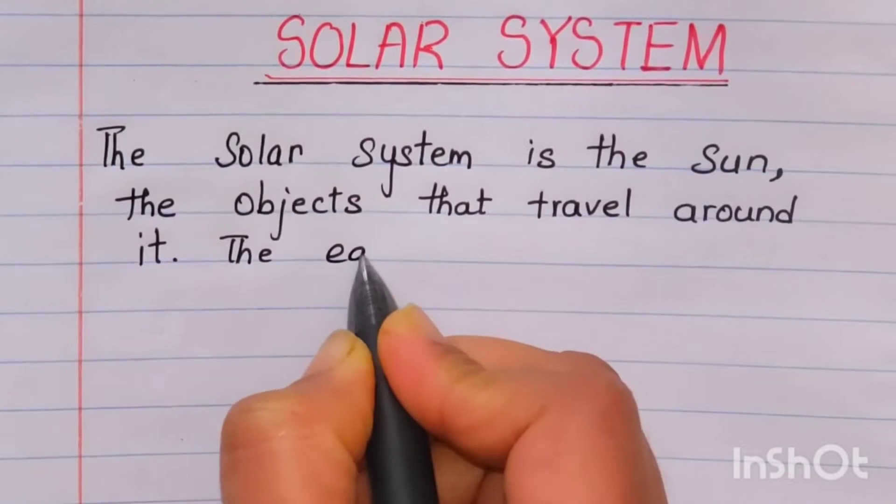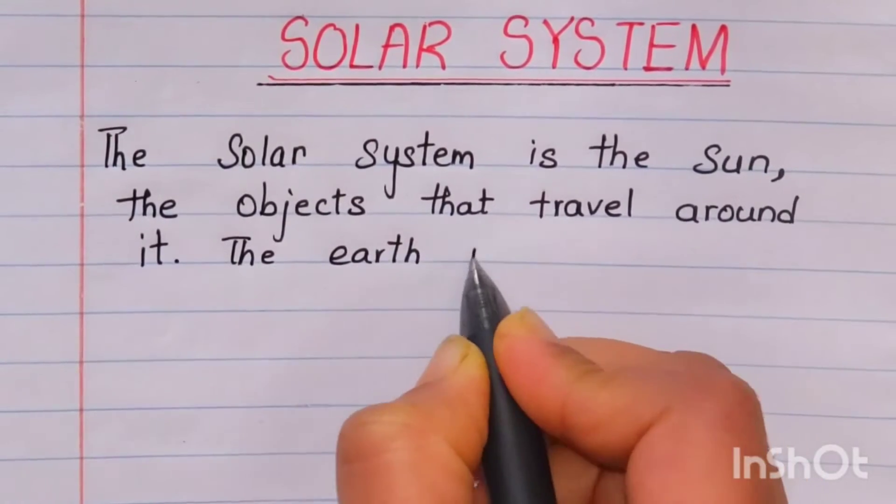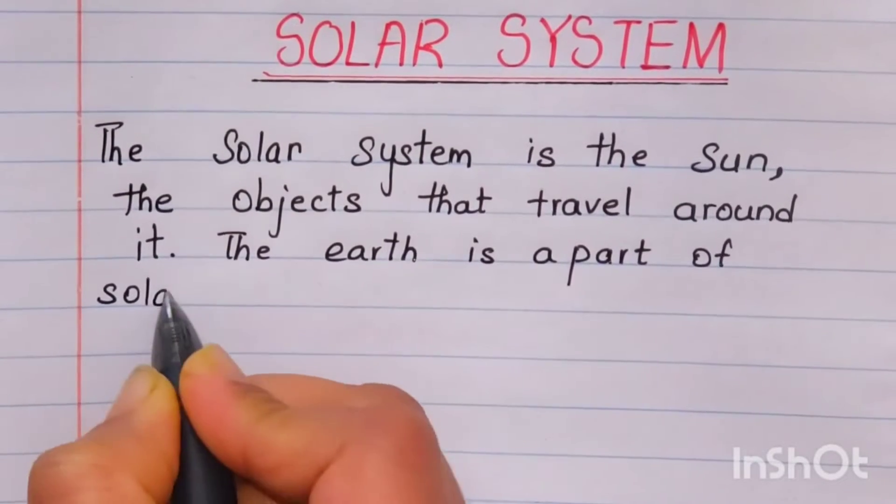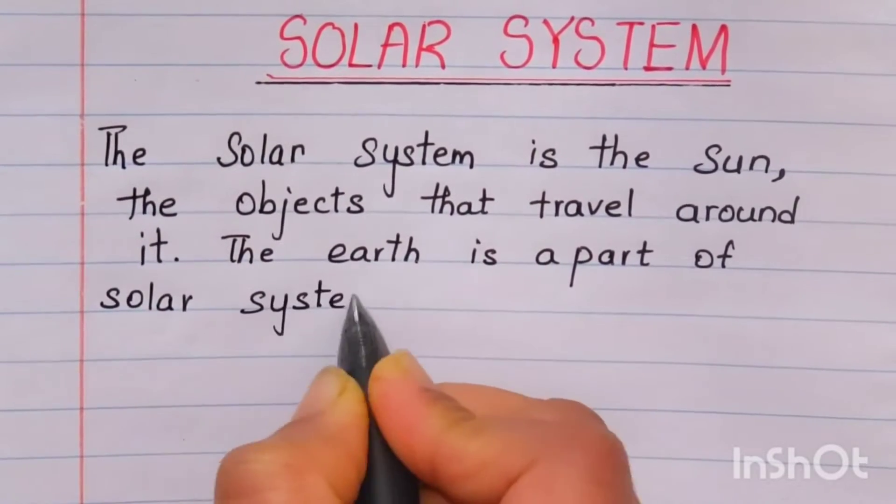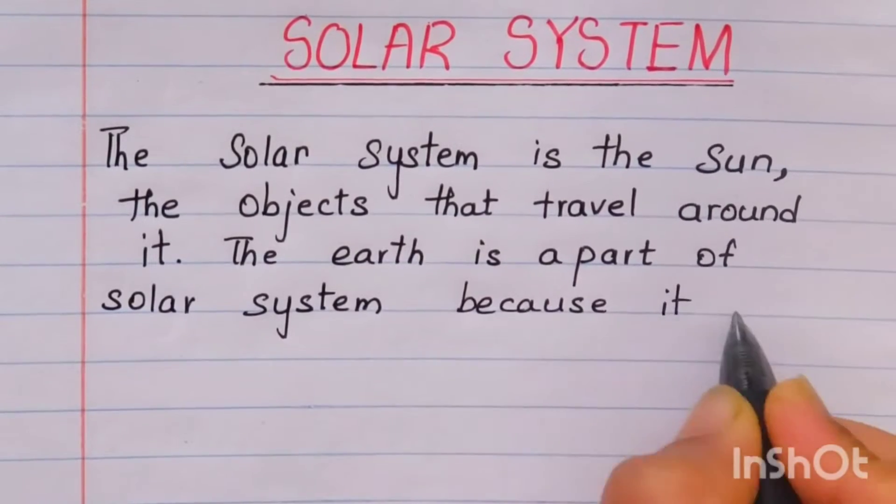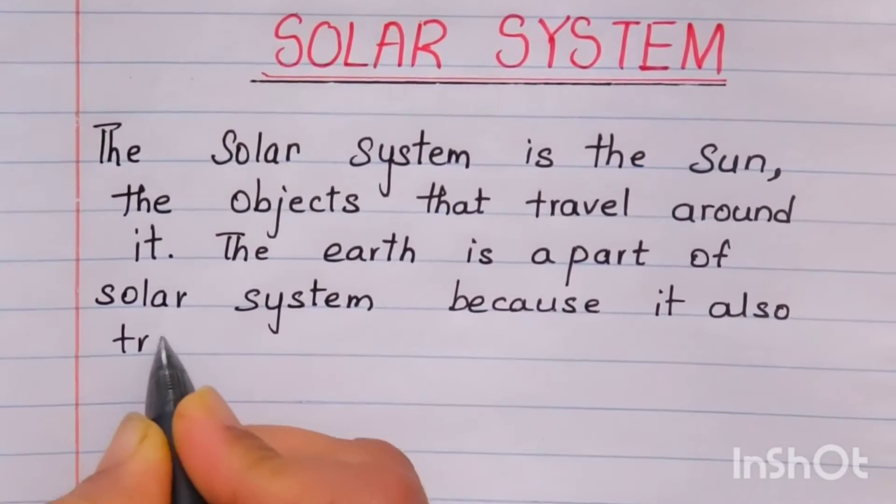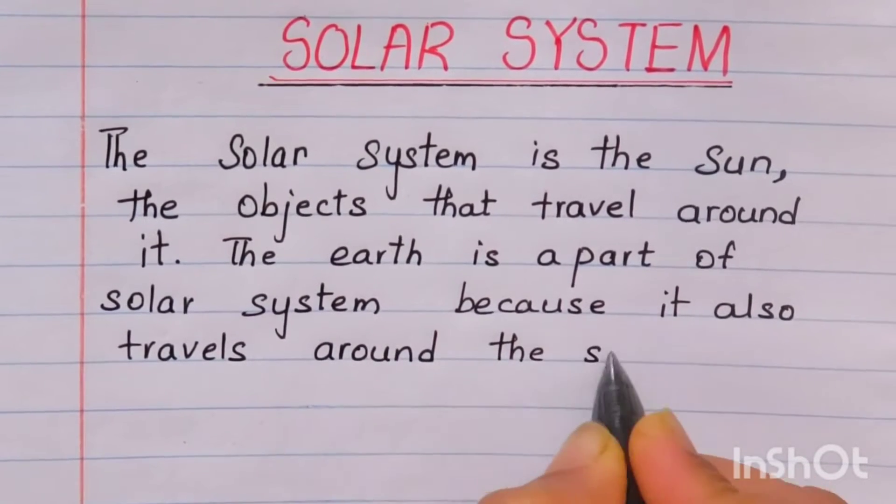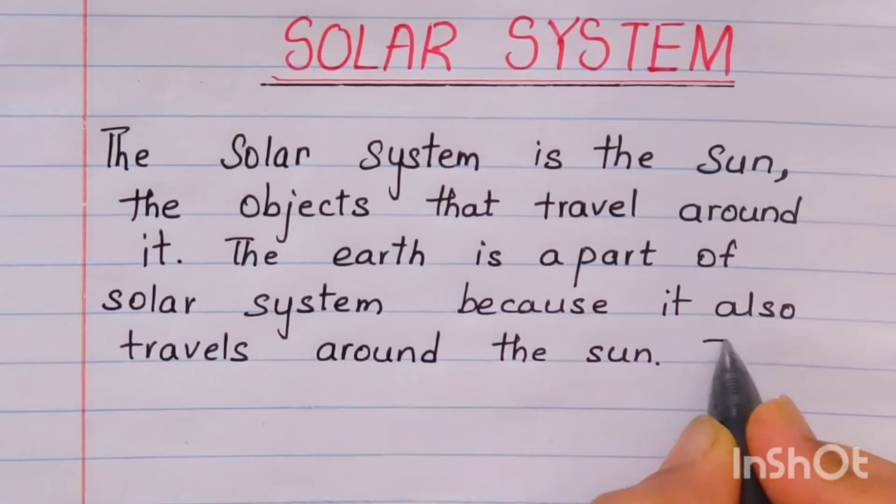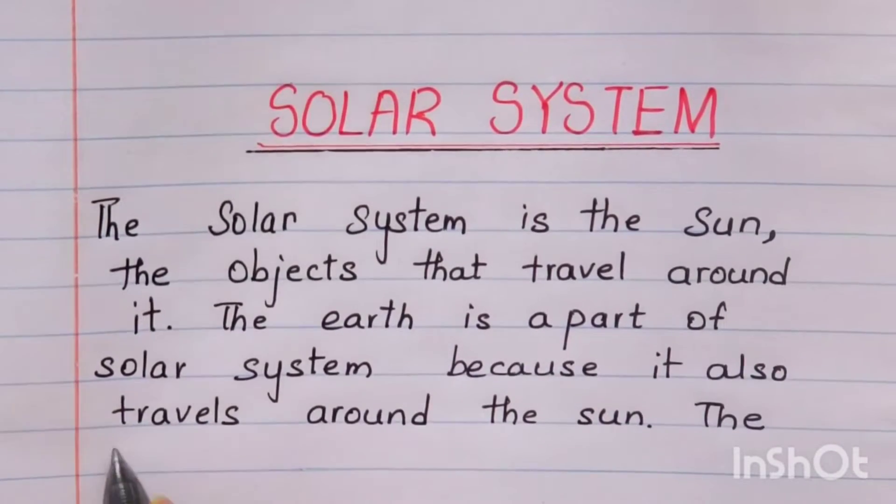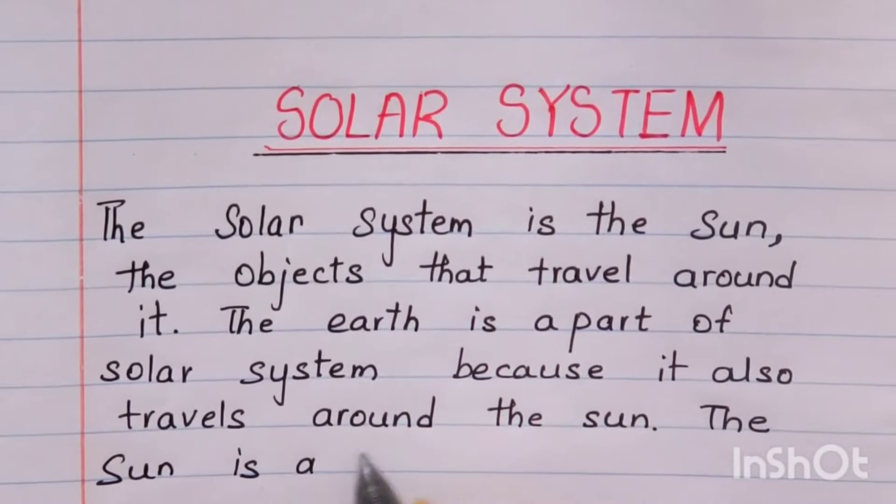The solar system is the sun and the objects that travel around it. The earth is a part of solar system because it also travels around the sun.